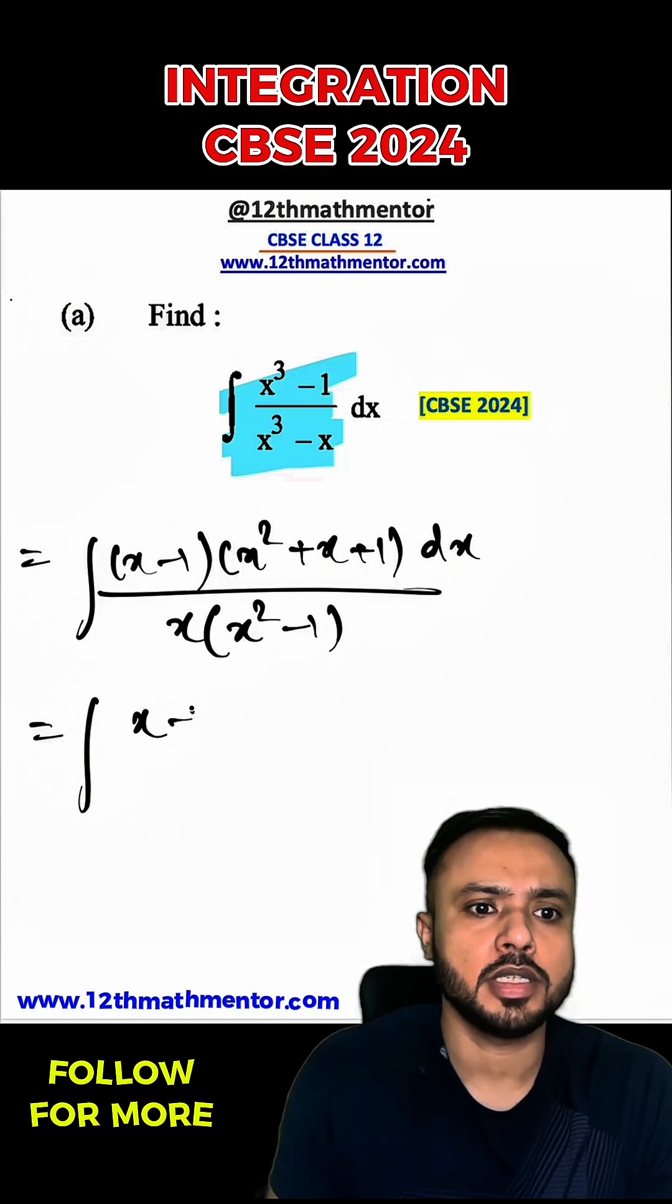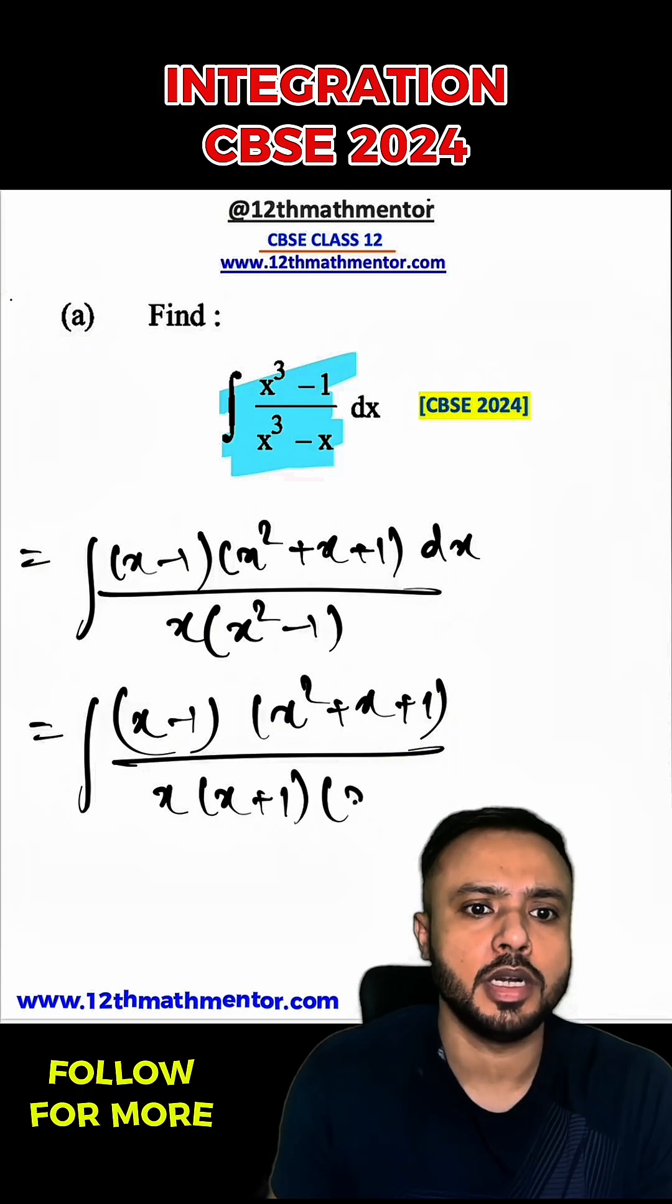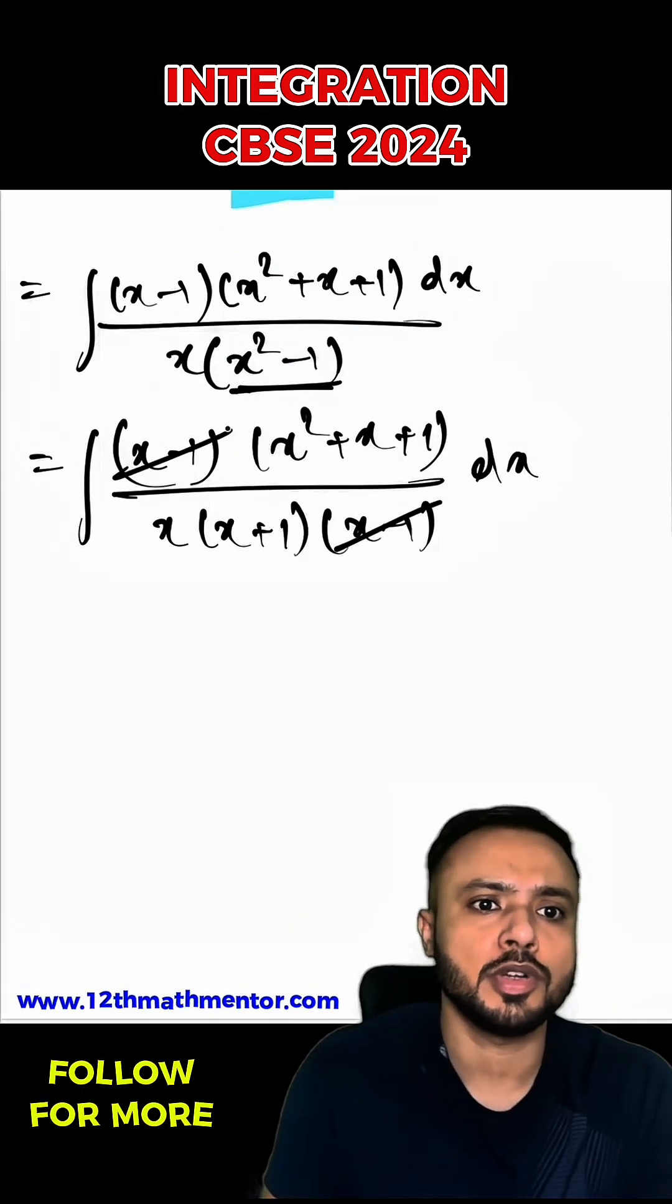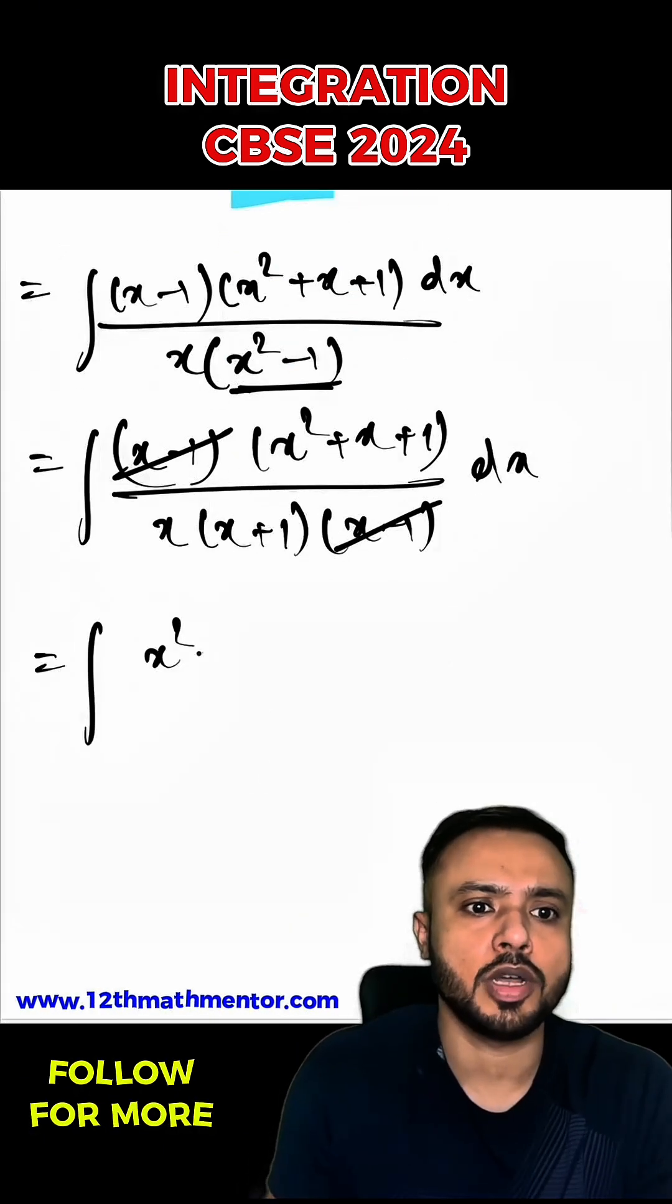Now I can write it as x minus 1 into x square plus x plus 1 upon x into x plus 1 into x minus 1 dx. So I have used here a square minus b square identity. This x minus 1 and x minus 1 is gone, so I'm left here with x square plus x plus 1 upon x into x plus 1 dx.